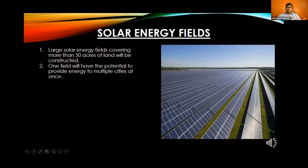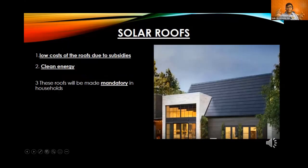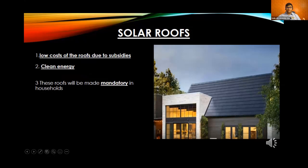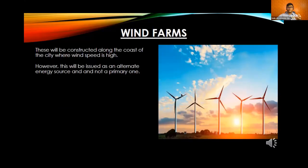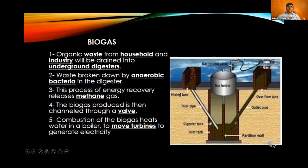Our city's primary energy source will be solar energy. Solar roofs will be mandatory for new houses, provided at low cost through subsidies. Solar paint, a very new material using nanoscale semiconductors, can be used on small appliances and shows high prospects. Solar windows will be used in all government offices, with an efficiency of around 20%, allowing government buildings to run themselves. Wind farms will serve as a backup energy source if something happens to the main smart grid, which operates on the Internet of Things.